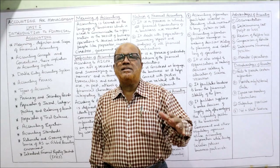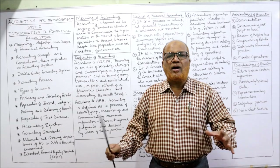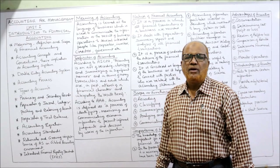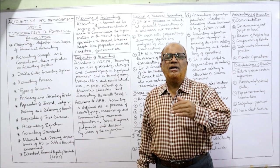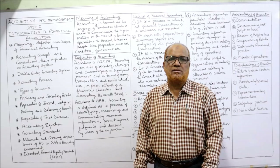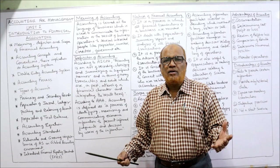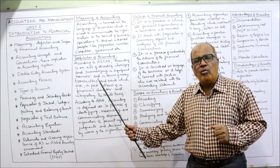Financial accounting is the oldest form of accounting; later on, different branches of accounting were developed. Accounting is called the language of business — a business communicates its financial information with the help of accounting to outside parties. Just like every language has its own rules and regulations, accounting also has rules and regulations.